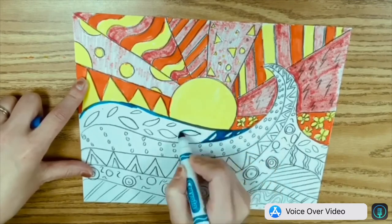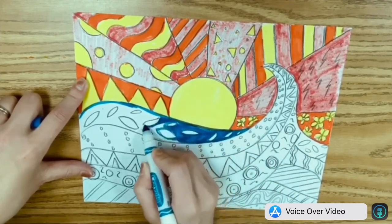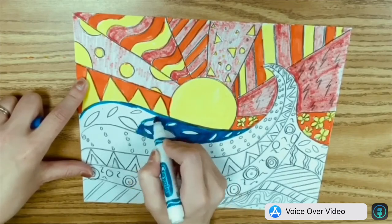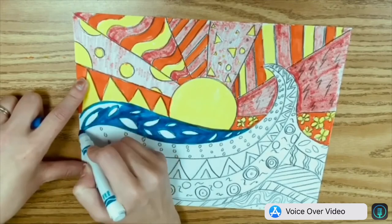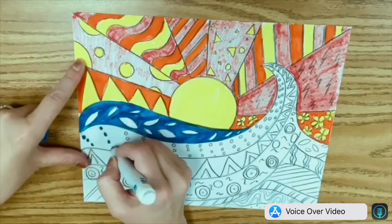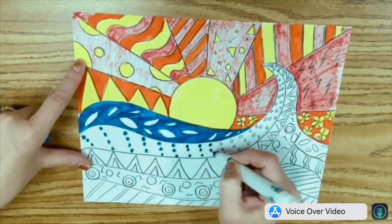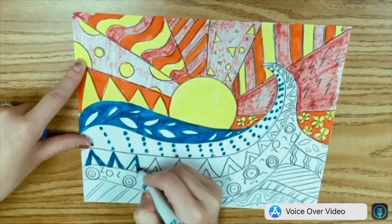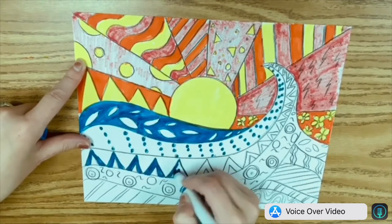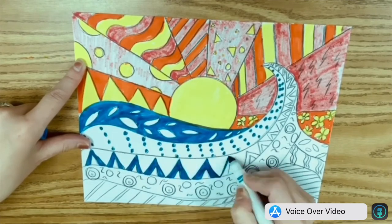Again, like I said before, there's no rhyme or reason to it. It's however you want to do it. You are the artist. You get creative and you design. You want blue in certain spots, green in other spots, purple. It's up to you. So the goal here is just to make sure that all the white space is covered.